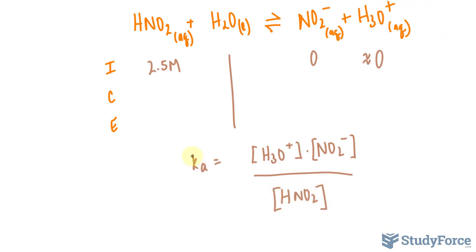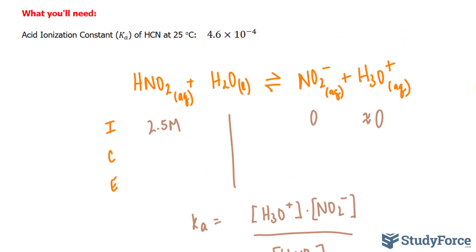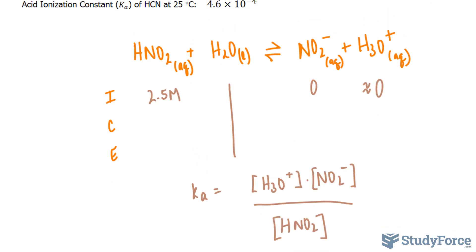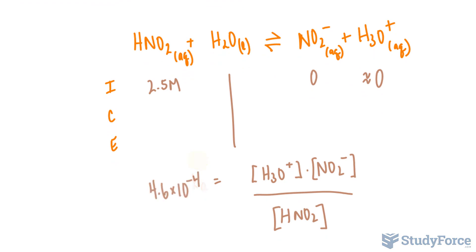So we can substitute in K sub A. That's given in the question, 4.6 times 10 to the power of negative 4. And now we need to find the equilibrium concentrations for these. So we'll come up with some algebraic expressions. I'll set any one of these molecules, their change, as X.